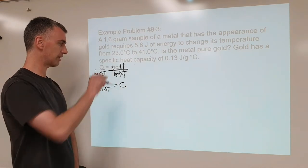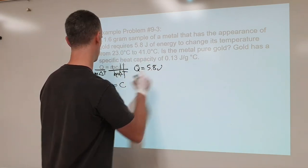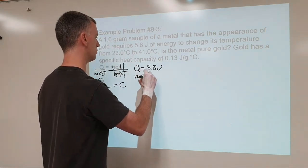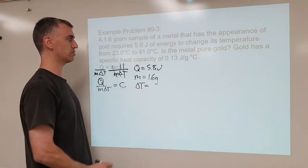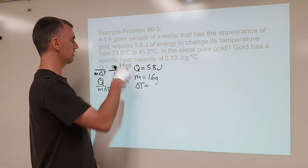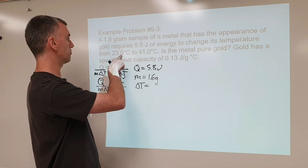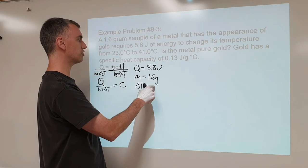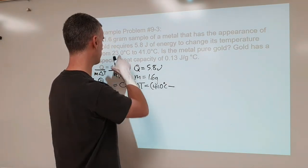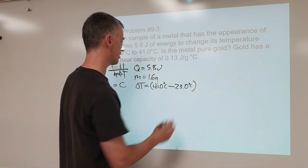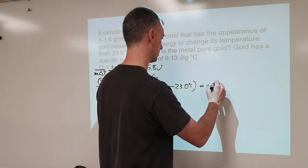All we have to do is plug in the numbers and get our answer, making sure to show units. Q equals 5.8 joules, mass equals 1.6 grams. Always show your work for delta T — don't just write the value that came out of your calculator without showing how you got it. The temperature is rising from 23 to 41, so make delta T positive. We'll do 41.0 degrees Celsius minus 23.0 degrees Celsius, giving a delta T of 18 degrees Celsius.